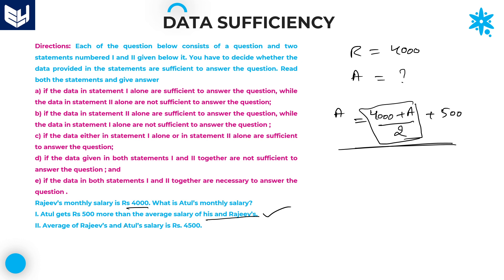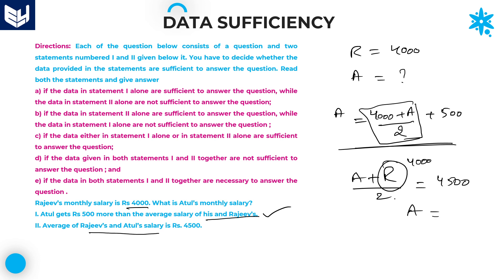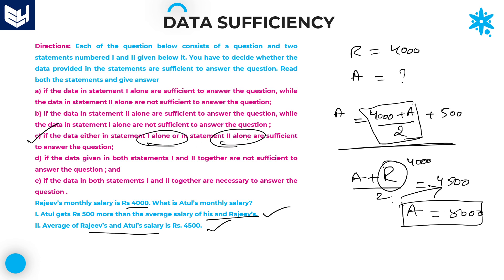Now let's see statement 2 alone. The average of Rajiv's and Atul's salary is 4500. Average is sum divided by number of persons, equal to 4500. We know Rajiv equals 4000. So Atul equals 9000 minus 4000, which is 5000. 5000 is Atul's salary. You also get the answer using statement 2 alone. In both cases you get the answer, so either statement 1 alone or statement 2 alone is sufficient. Option C is the right answer.